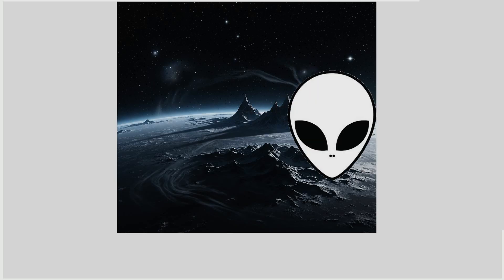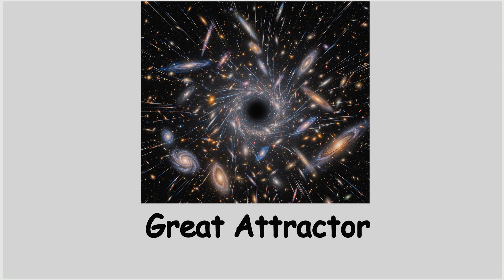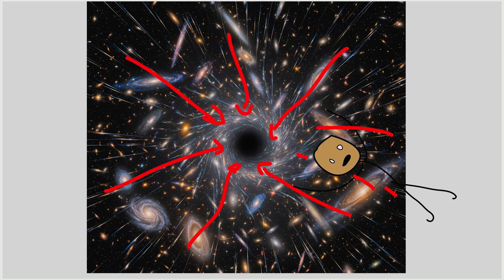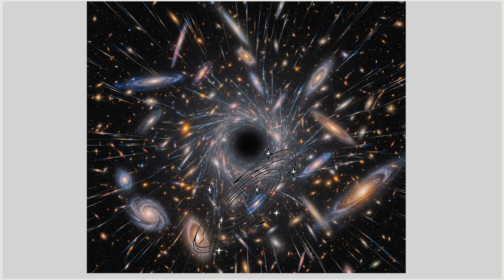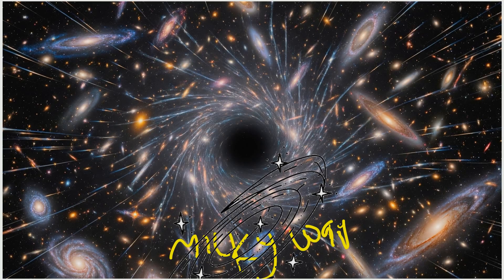The Great Attractor. The Great Attractor is a gravitational anomaly in intergalactic space that appears to be drawing galaxies, including our own Milky Way, toward it at speeds over 600 kilometers per second.